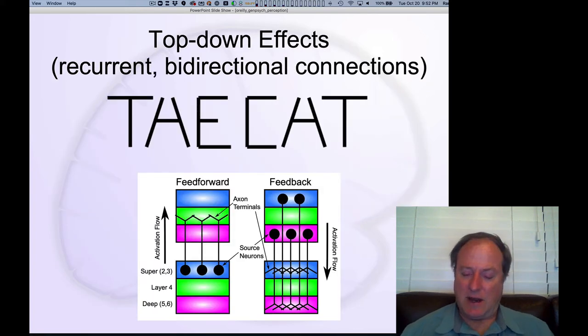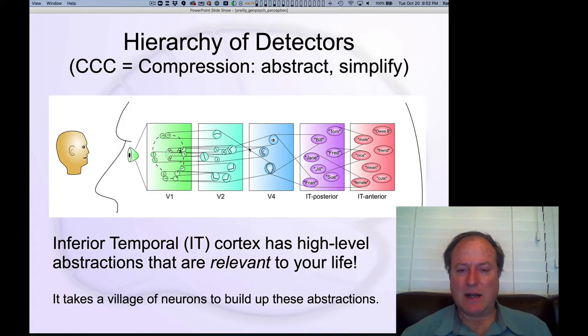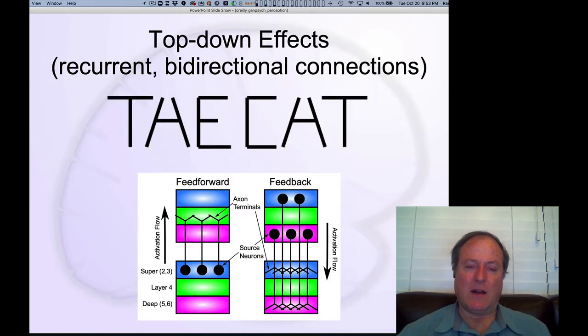So this diagram also doesn't include arrows, but these connections go both directions. So there's both feed forward information flowing up and feedback information flowing back down. And we talked about this a bit in the consciousness context, where this recurrent connectivity, bidirectional flow of activation up and back in these networks is really important for that feeling of consciousness. And it also has a lot of effects in perception.